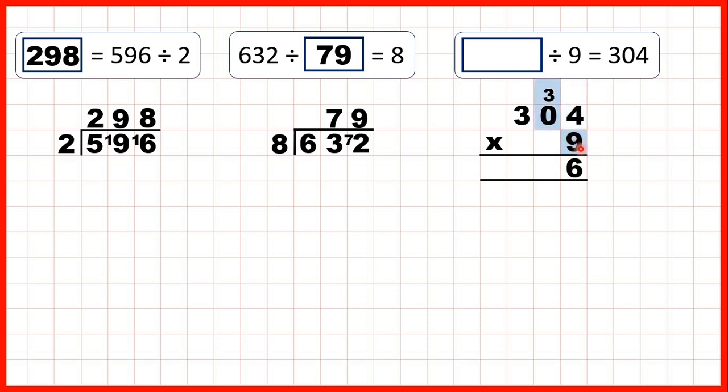0 times 9 is 0 plus 3 is 3. And 3 times 9 is 27. So, our missing dividend is 2,736.